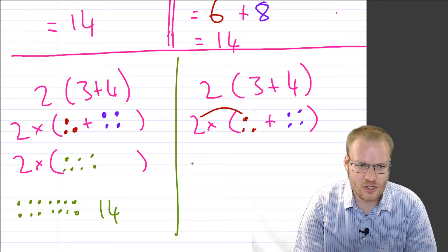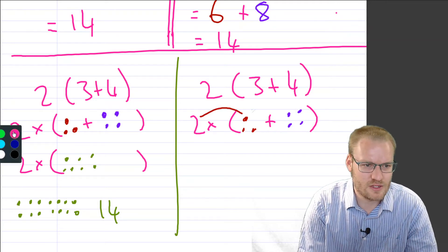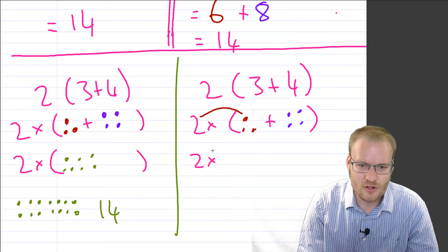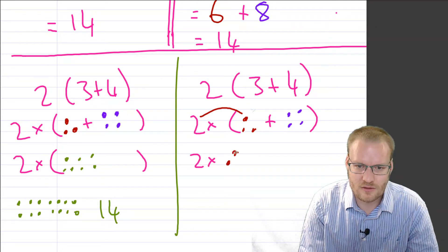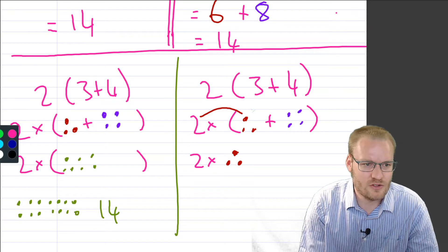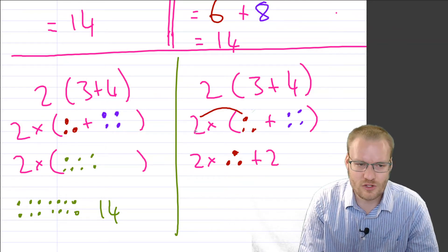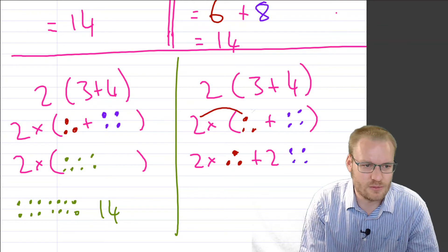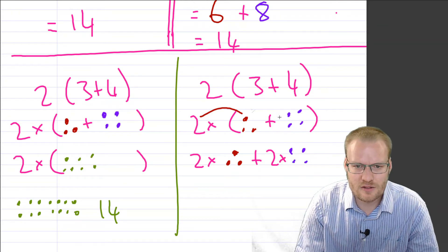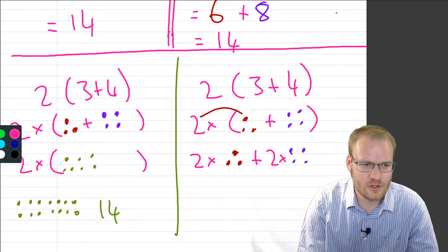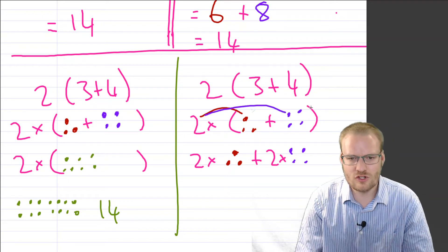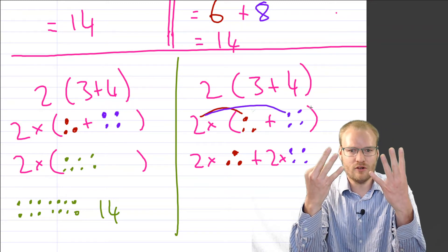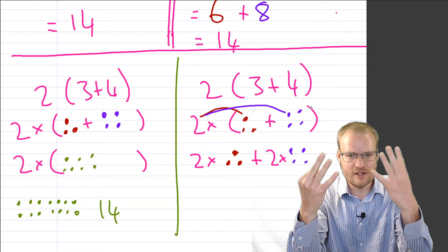So let's just do that like that. We've got 2 lots of 4. So let's put a multiplier. So in other words, we've got 2 of 3 and 4. So in other words, we've got 2 3s and 2 4s.